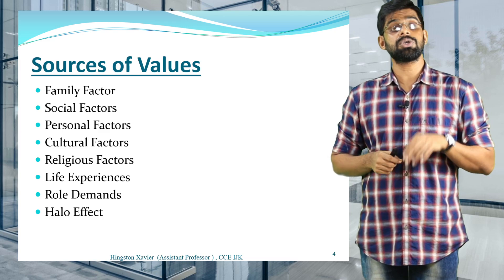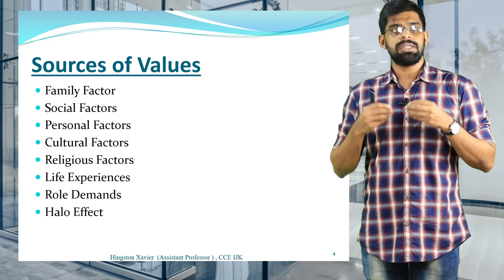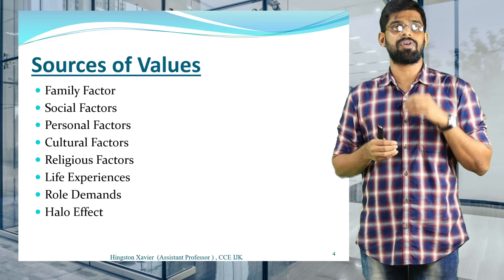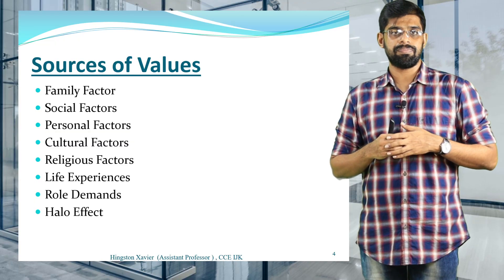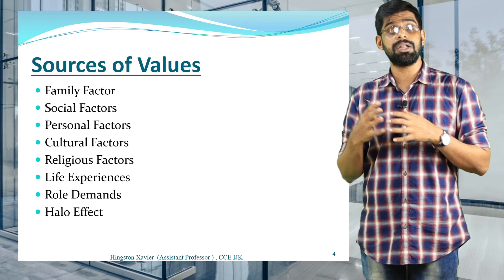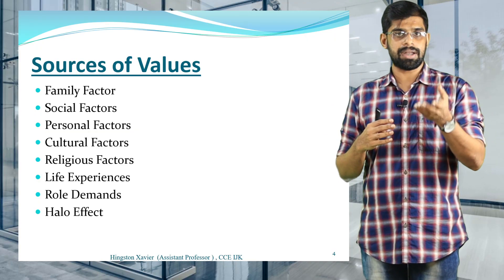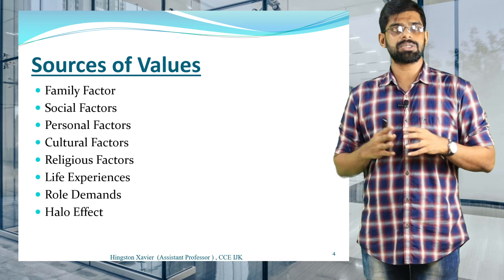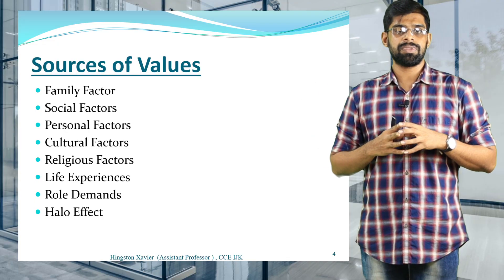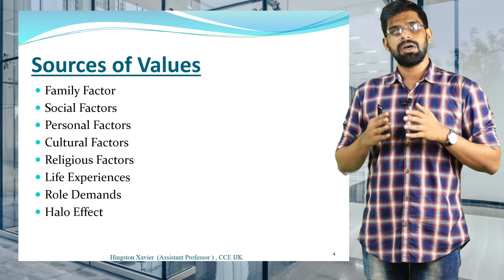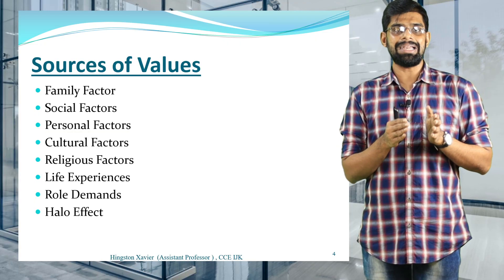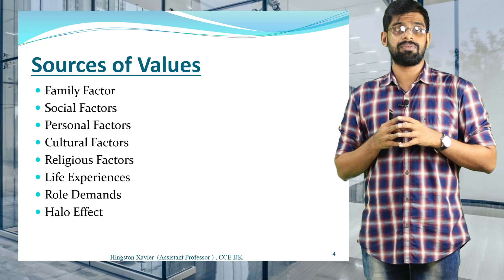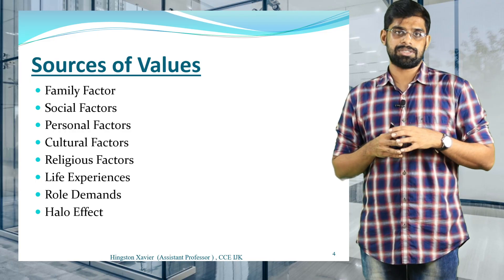The very important source of human values is your family itself. From childhood, values like respecting seniors and greeting elderly people are inculcated by family members — your parents, cousins, and relatives. The second source is social factors, referring to the society and people you belong to. The third is personal factors — the values inculcated by family differ from place to place; for example, values in Ernakulam district may differ from those in Kasaragod or Calicut.